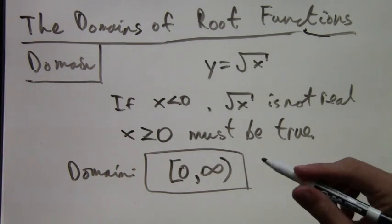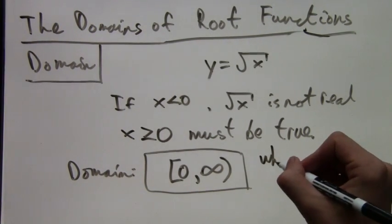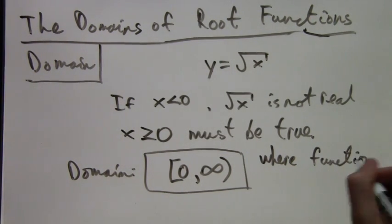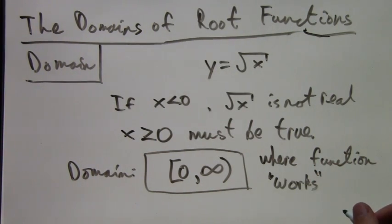Now let's take a look at some other examples. The domain is where the function works. It's the set of numbers that we are allowed to plug in.